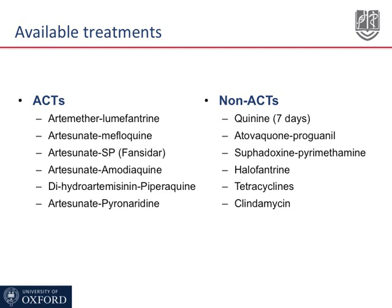This slide shows the available treatments. On the left-hand side are the artemisinin combination therapies. All these treatments have in common an artemisinin derivative — either artemether, artesunate, or dihydroartemisinin — and they differ by the partner drug. Partner drugs with the longest elimination half-life providing the longest post-treatment prophylactic effect are mefloquine and piperaquine. On the right-hand side are non-ACT treatments sometimes used: quinine, still effective but requiring seven days; atovaquone-proguanil, effective but very expensive; sulfadoxine-pyrimethamine (Fansidar), not to be used as monotherapy due to resistance; and halofantrine, which should not be used because of the high risk of cardiotoxicity.